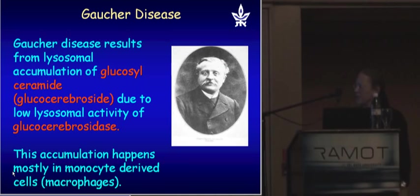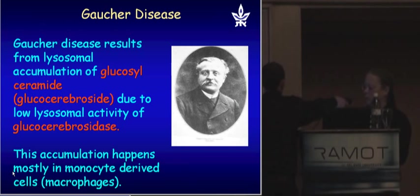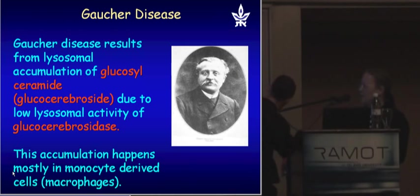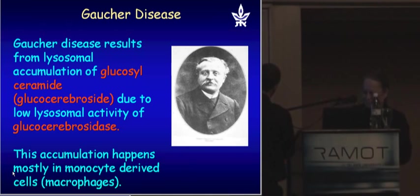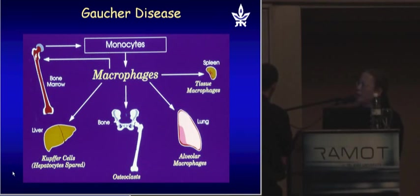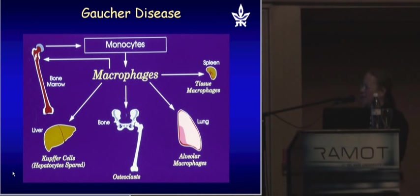Gaucher disease is a genetic disease inherited as an autosomal recessive trait, and it is due to accumulation of the lipid glucosylceramide, mainly in cells of the reticuloendothelial system, namely in macrophages. This accumulation is due to mutations in the gene encoding the lysosomal enzyme glucocerebrosidase.